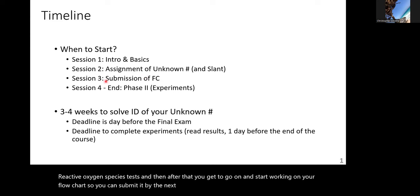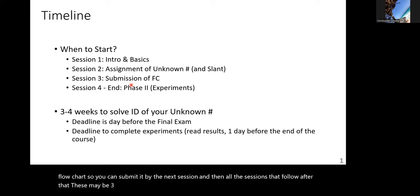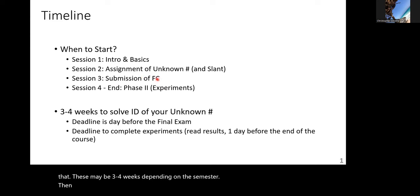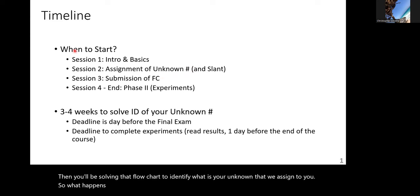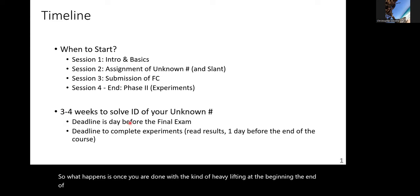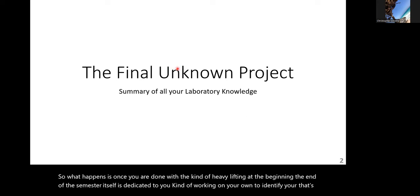After the primary tests, you get to go on and start working on your flowchart so you can submit it by the next session. All the sessions that follow — which may be three or four weeks depending on the semester — you'll be solving that flowchart to identify what your unknown is. Once you're done with the heavy lifting at the beginning, the end of the semester is dedicated to working on your own to identify your unknown.